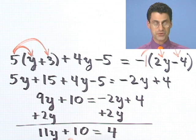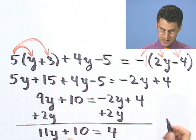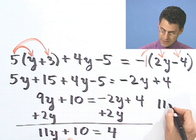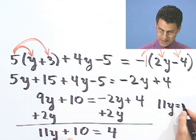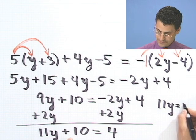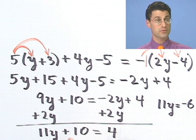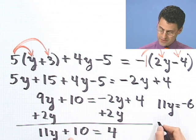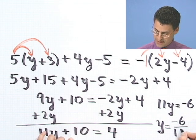Now I want to bring that 10 over, so I'll subtract 10 from both sides. And if I subtract 10 from both sides, what would I see? I would see 11y equals, if I bring this 10 over, I'd see minus 6. Because 4 minus the 10 would be minus 6. And so y would equal minus 6 over 11.